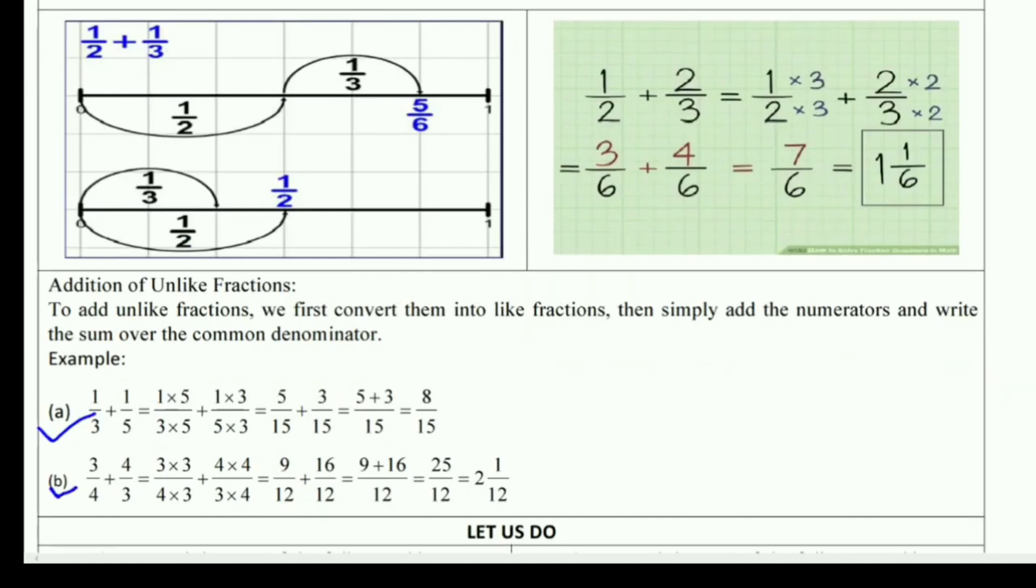Part b is 3/4 plus 4/3. Multiply the first by 3 and the second by 4. In the second step, this gives us 9/12 plus 16/12. Both denominators are the same. Answer: 12 as denominator, add the numerators: 9 plus 16 equals 25/12. So 25/12 is your answer.